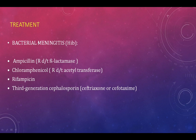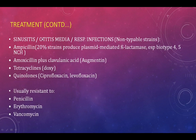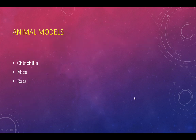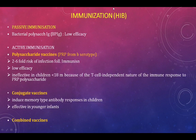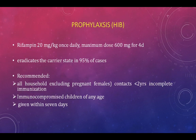Identification is confirmed by demonstrating growth in the presence of both X and V factors. Additional tests include hemagglutination, latex particle agglutination, and PCR. Treatment for meningitis includes ampicillin or third-generation cephalosporins. For sinusitis, ampicillin can be used. Animal models for pathogenicity studies use chinchilla, mice, and rats. Immunization options include passive immunization (immunoglobulin, short-term), and active immunization using polysaccharide vaccines, conjugate vaccines, or combination vaccines.